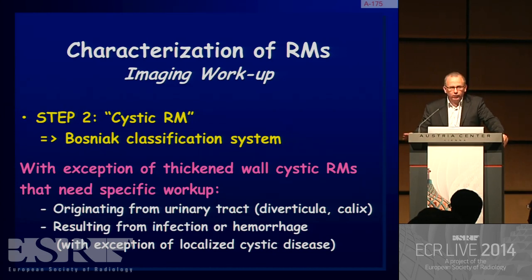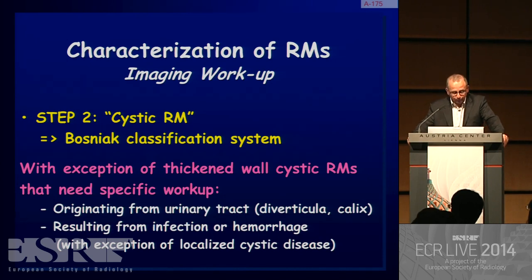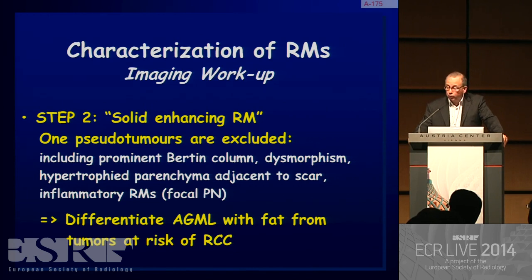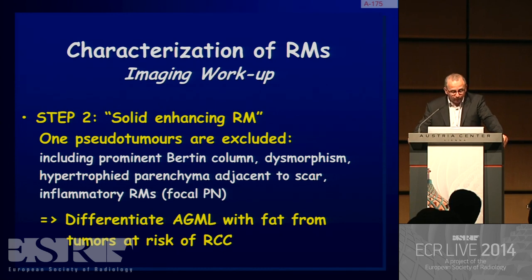Cystic renal masses fall under the Bosniak classification system. However, some lesions cannot be classified using this system — including thickened wall cystic masses originating from the urinary tract, like diverticular or calices, or those resulting from infection or hemorrhage, with the exception of localized cystic disease. Step 2 also includes identification of solid-enhancing pseudo-tumors to exclude, such as prominent Bertin columns, dysmorphism, hypertrophic parenchyma adjacent to scar, or inflammatory masses like focal acute pyelonephritis.